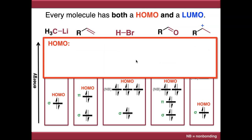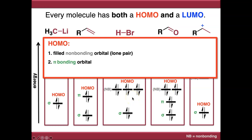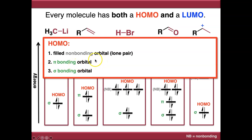Looking just at HOMOs, your HOMO will always be one of three things: a filled non-bonding orbital (i.e. a lone pair), a pi bonding orbital, or a sigma bonding orbital. This is the order to look for them in. If your molecule has a filled non-bonding orbital — a lone pair — that's likely to be the HOMO. If there are no lone pairs but there are pi bonding orbitals, the pi bonding orbital is likely the HOMO. If neither of those exist, then the sigma bonding orbital will be the HOMO.